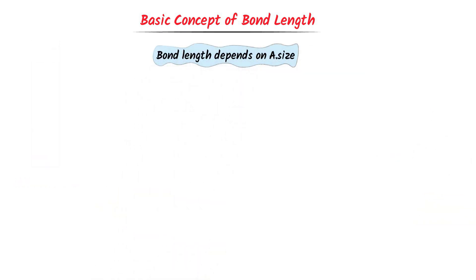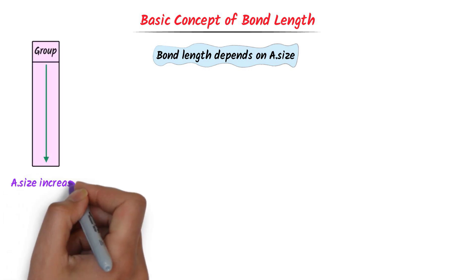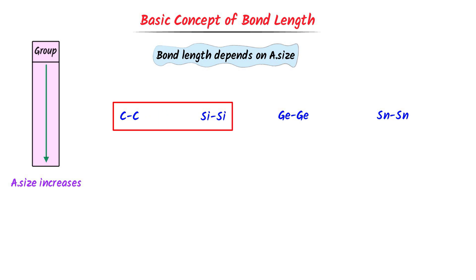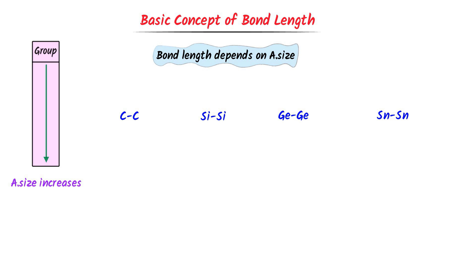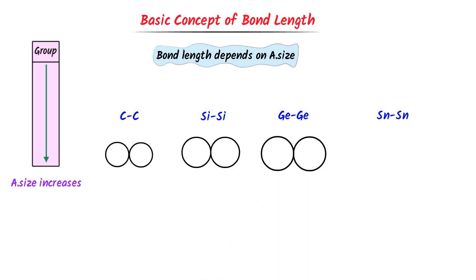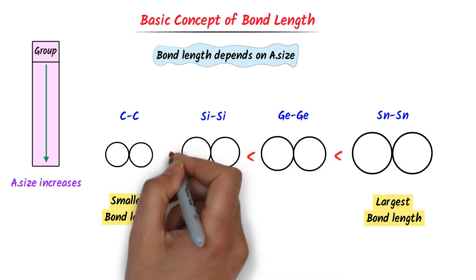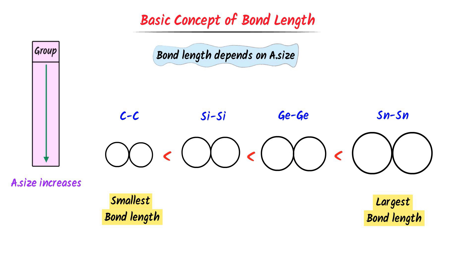Secondly, bond length depends on atomic size. We know that atomic size increases down the group. Consider these molecules: carbon, silicon, germanium, and tin are all in the same group. Their respective atomic sizes increase down the group. The size of carbon is smallest, silicon is a little bigger, germanium is bigger, and tin is biggest. We can see that tin has the biggest size, hence its bond length is also the largest, while carbon has the smallest size and thus the lowest bond length. This is the order of decreasing bond length. Bond length is proportional to atomic size. Note down this second concept of bond length.